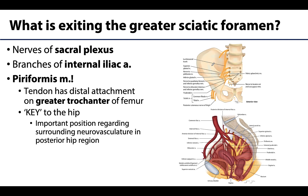There are quite a few structures exiting the greater sciatic foramen that originated in the pelvis. There will be multiple branches of the sacral plexus coming out from the anterior sacral foramina, and these branches will exit the greater sciatic foramen in order to reach specific regions of the lower limb, as the sacral plexus is the prominent supply for the lower limb other than the anterior medial thigh.